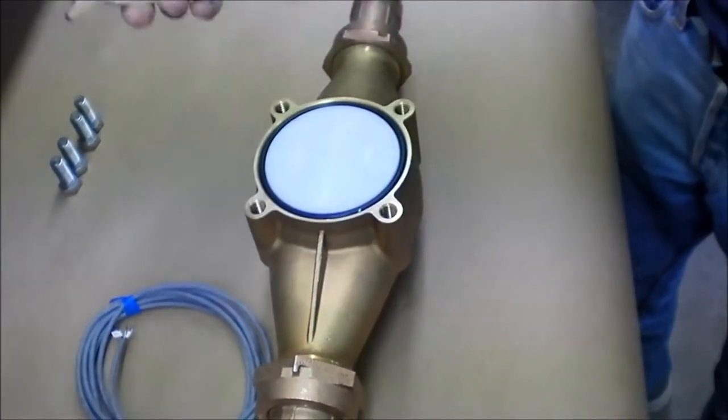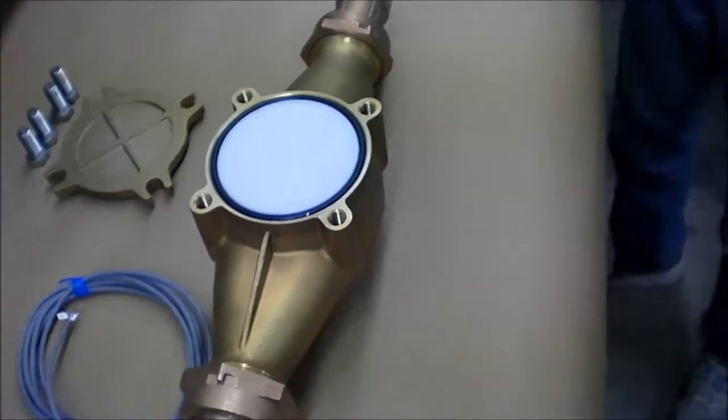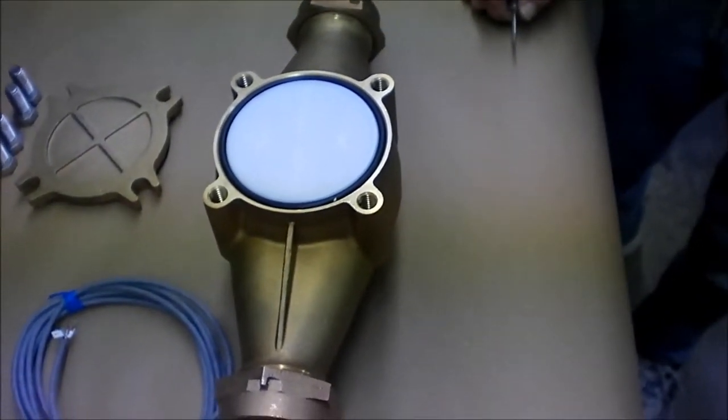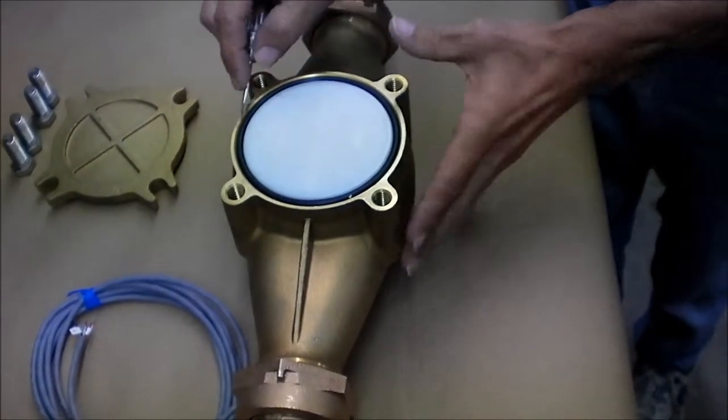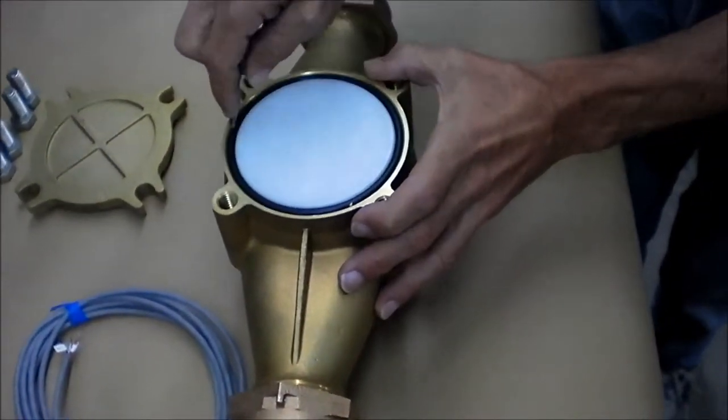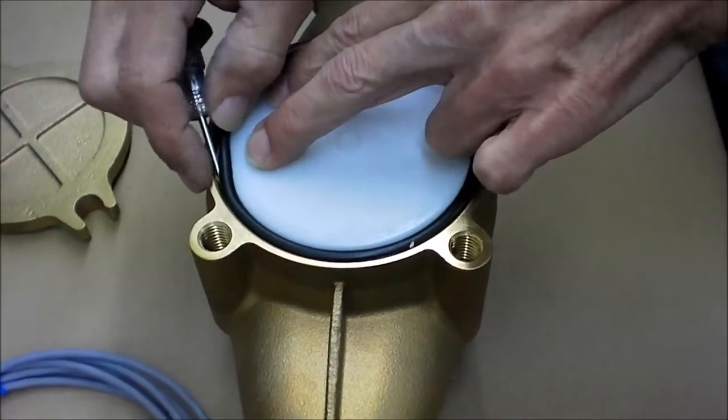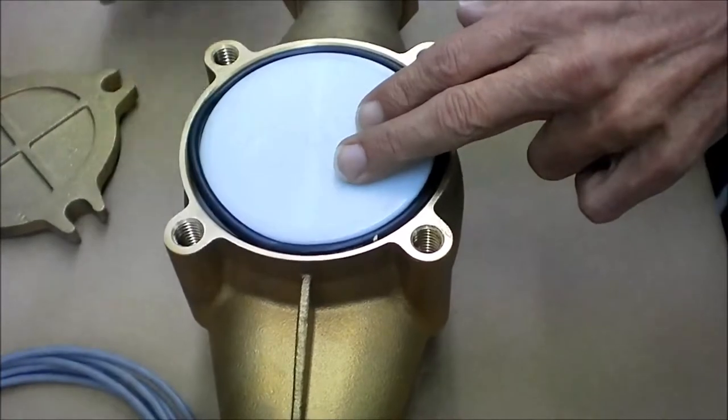Once the bottom plate is removed, underneath we're going to have a seal retainer, which is the wide object, and then the plate seal, which keeps water from leaking from the bottom of the meter. With a small screwdriver, what you'll do is carefully work around the O-ring, and then gently remove it.